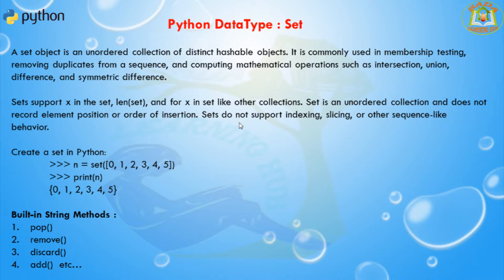The frozenset type is immutable and hashable. Its contents cannot be altered after creation because it is immutable. It can therefore be used as a dictionary key or as an element of another set.